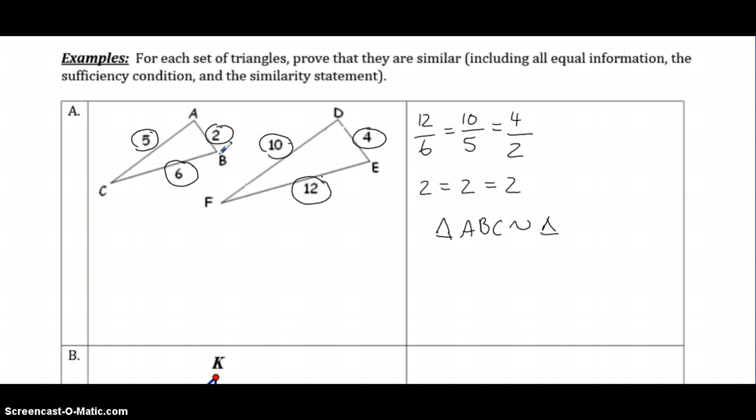So therefore, triangle ABC is similar to triangle, and then AB is along the shortest side. So the shortest side here is DE. And then BC is my longer side, so I'm going to go from E to F, the last two. So therefore, triangle ABC, in a squiggly line means similar, so it is similar to triangle DEF. And the reason is because of side, side, side similarity.